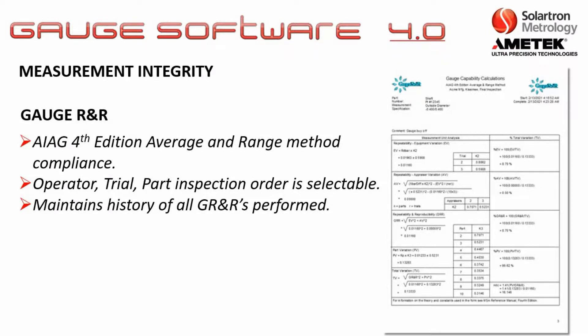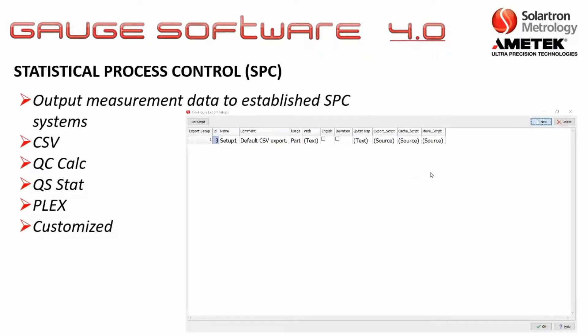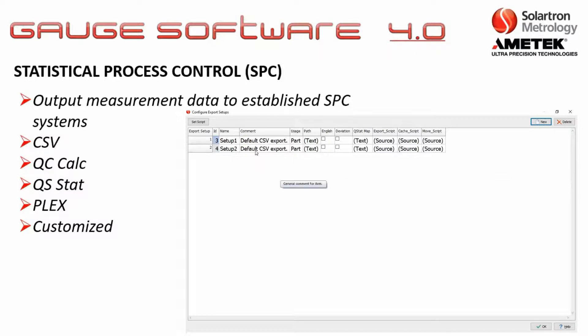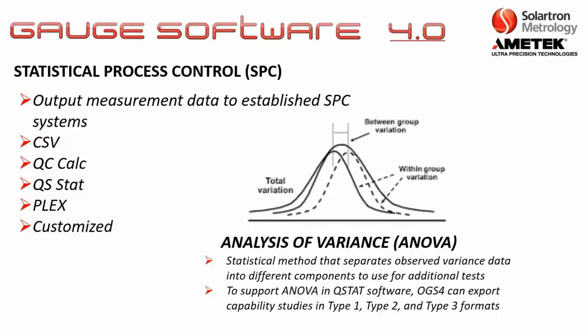There are also multiple ways for statistical process control. For data export, you can output any measurement data to established SPC systems. The most common format is CSV, but formats for QC Calc, QS-Stat, Plex, and other packages can be customized. To support ANOVA and QStat software, OGS4 can export capability studies in Type 1, Type 2, and Type 3 formats.